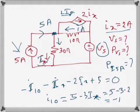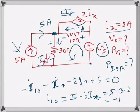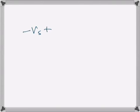Now we need to find VS. Let's apply KVL in this loop. First, let's label all the voltage drops. The current is going right to left so the drop is in that direction. Going counterclockwise, VS is a rise, so we write minus VS. Then the voltage drop across the 10 ohm resistor is a drop, so that's plus 10 times 1 by Ohm's law.